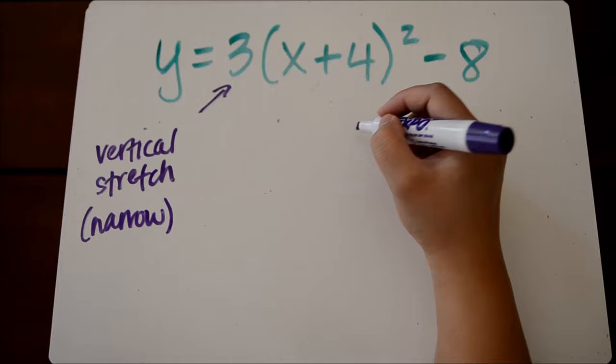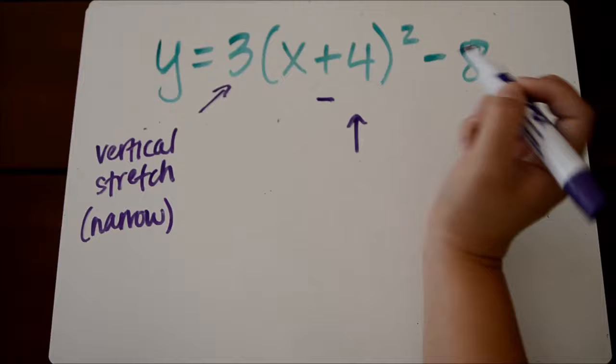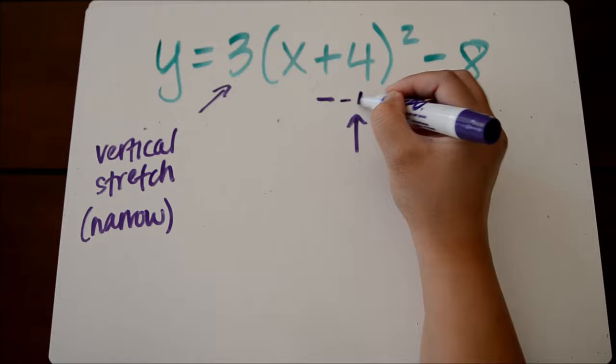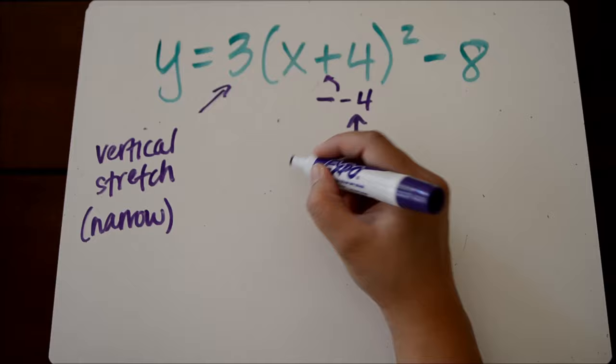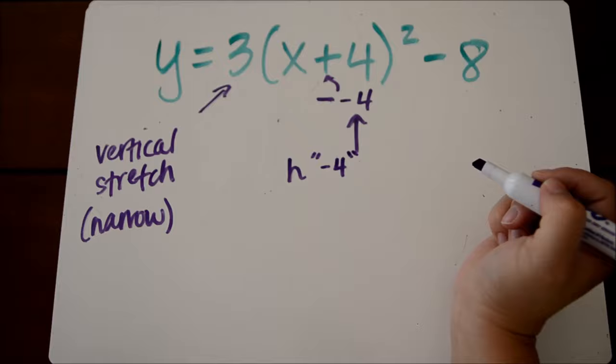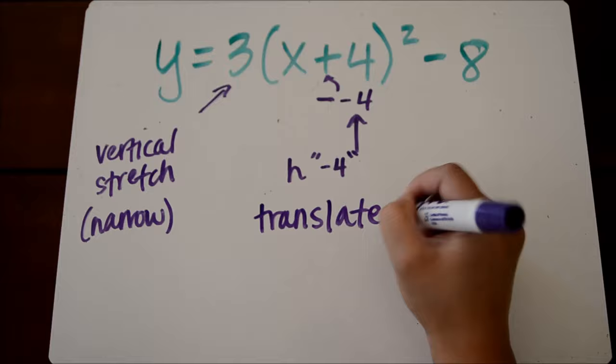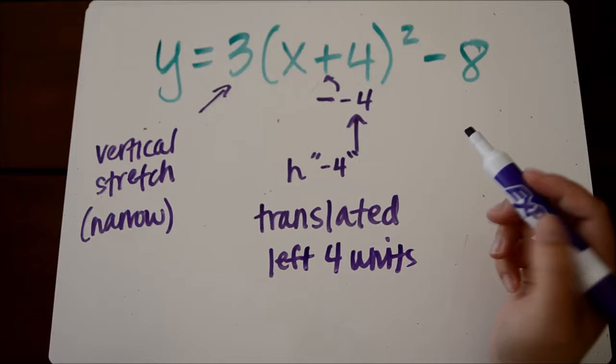Our h value here, remember we had a minus sign in vertex form, so this is actually minus a negative 4. That's how it becomes plus 4. So since our h value is actually a negative 4, what that means is our graph went to the left 4 units. And I know that seems very counterintuitive, because it says plus 4. If you need to think about it as doing the opposite, then you can think about it that way. But there's a reason, and it's because it's minus a negative.